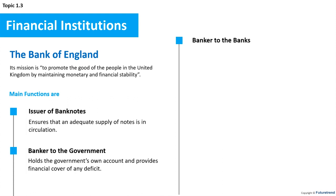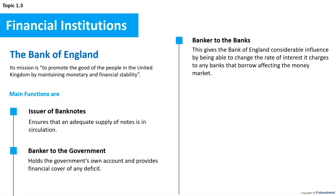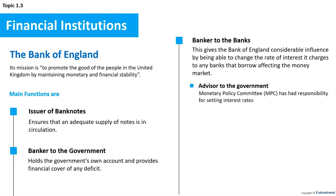As banker to the banks, all major banks have an account with the Bank of England for depositing or obtaining cash and other transactions. This gives the Bank of England considerable influence by being able to change the rate of interest it charges to banks that borrow, affecting the money market. As advisor to the government, since 1997 the Bank's Monetary Policy Committee (MPC) has had responsibility for setting interest rates, meeting eight times a year with a mandate to set the base rate to ensure the government's inflation target is met.